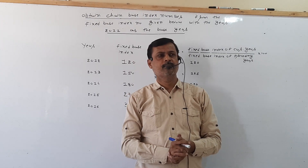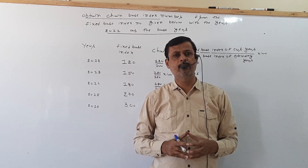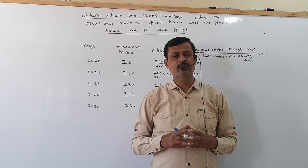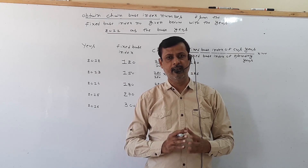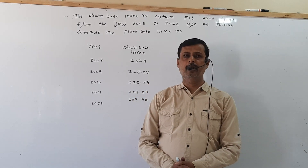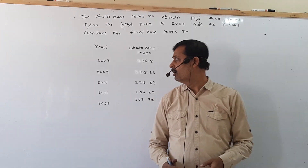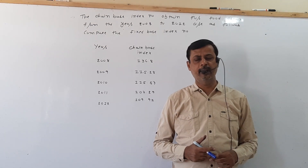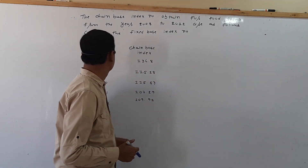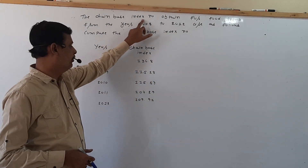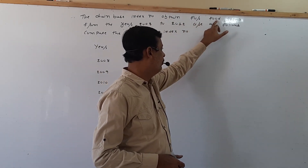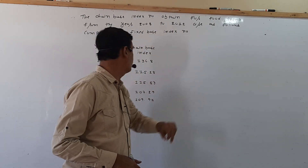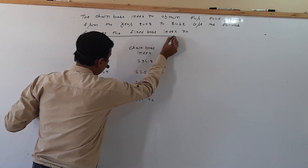So here we have converted fixed base into chain base. Now in our next example, we will convert chain base index into fixed base index. The chain base index numbers obtained for food items from the year 2008 to 2012 are given. Compute the fixed base index.